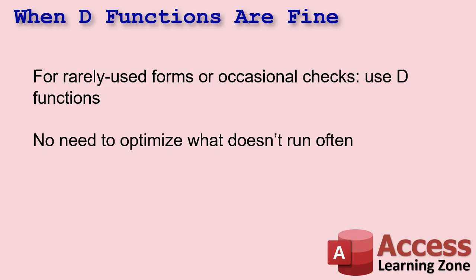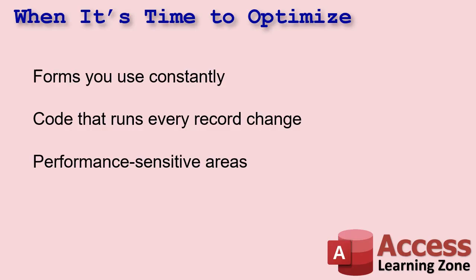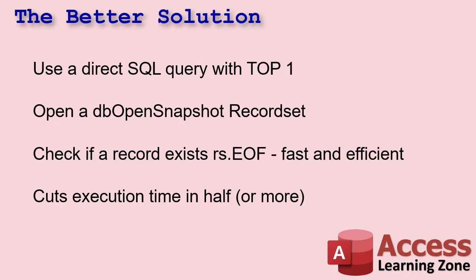So it's time to pull out more advanced tools from our toolbox. Forms you use constantly throughout the day, code that runs every record change like an OnCurrent event, performance-sensitive situations, loops — that kind of stuff. What's the solution? I'm going to talk about the solution briefly, then we're going to look at the code, and then we're going to go into some nerdiness afterwards. A little bit of theory, then the code, then a lot of theory after.